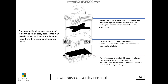The organizational concept consists of a rectangular seven-story base containing new diagnostic and treatment facilities, topped by a five-story curved linear bed tower. The geometry of the bed tower maximizes views and natural light for patient rooms while creating an environment for efficient and safe healthcare. The base connects to existing diagnostic and treatment facilities to create a continuous intervention platform. Part of the ground level contains an emergency department designed to be an advanced emergency response center for the city of Chicago.